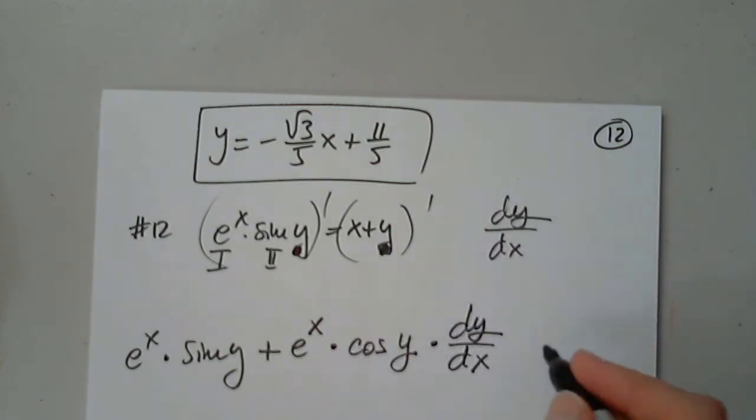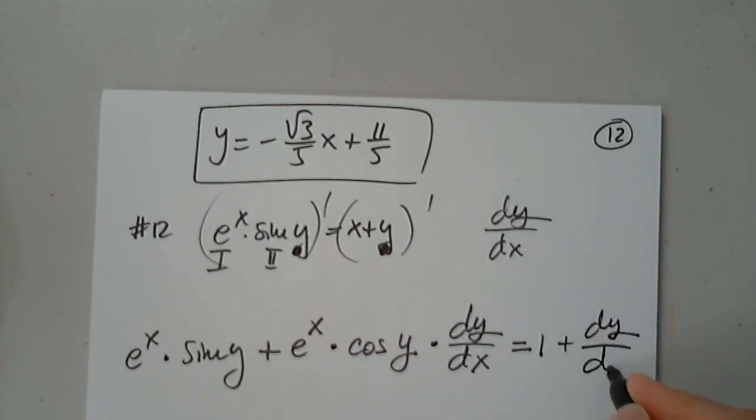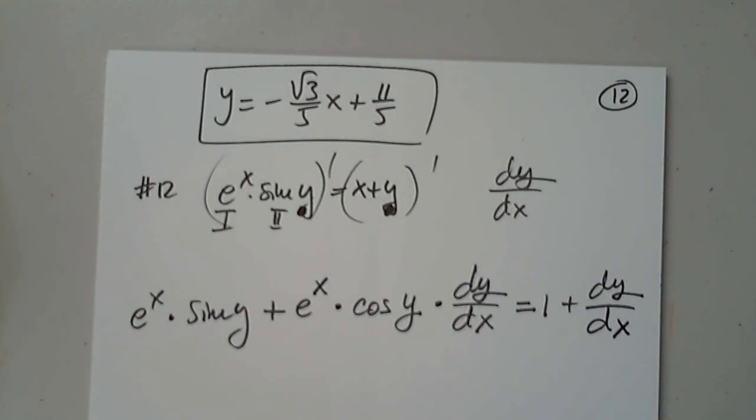The other side is nice. X prime is just the variable one, but plus dy over dx. Good.